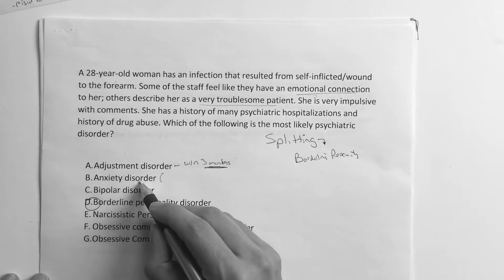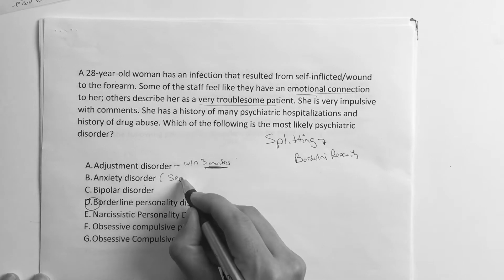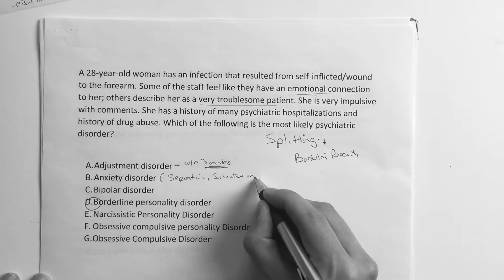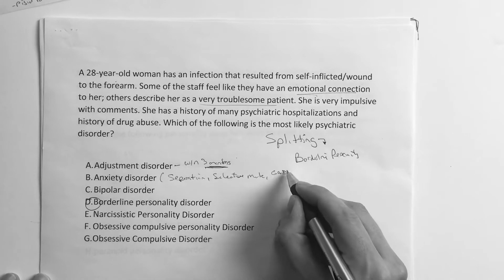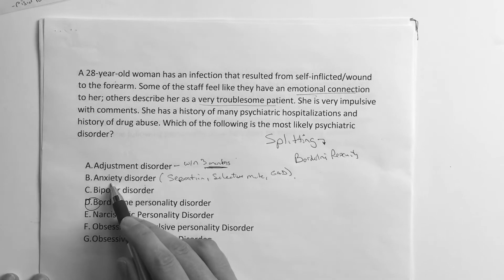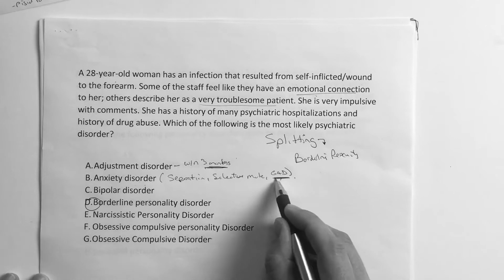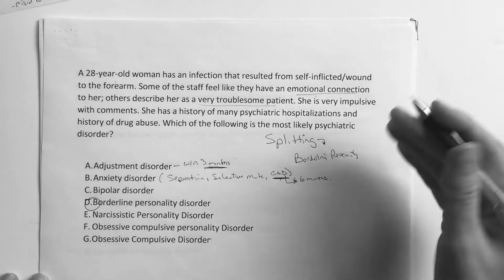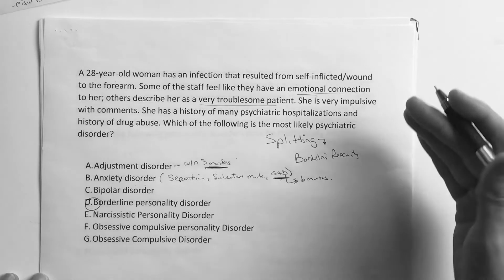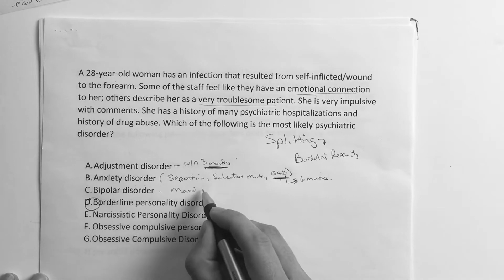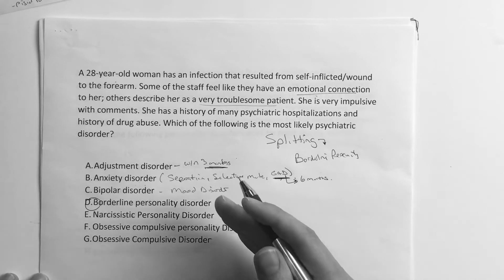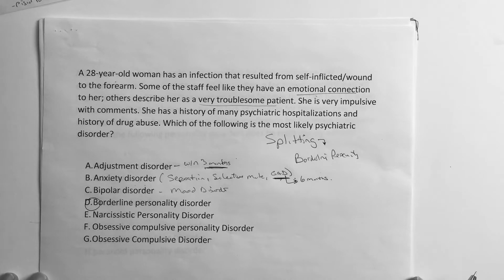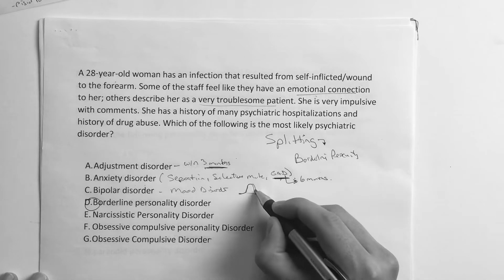Anxiety disorder is too broad a category — it includes separation anxiety, selective mutism, and GAD. Generalized anxiety disorder is the more specific answer you'd expect, and that requires at least six months of worry about future events that the patient doesn't understand why they're experiencing. Then bipolar is a mood disorder where you have to have a period of elevated mood — either manic or hypomanic — and then you go back down into a depressive state.